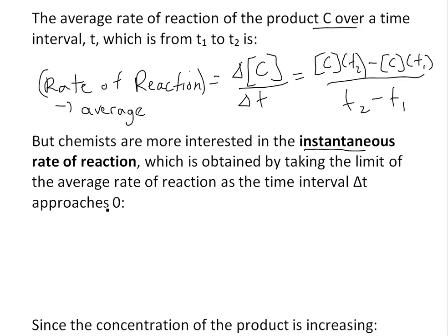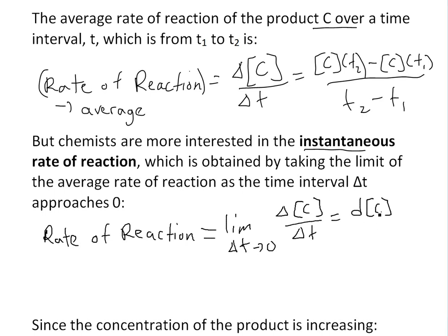In other words, the rate of reaction equals the limit as delta T approaches zero of delta [C] over delta T. This is just the definition of a derivative, so we write it as d[C]/dt, which is just a derivative.